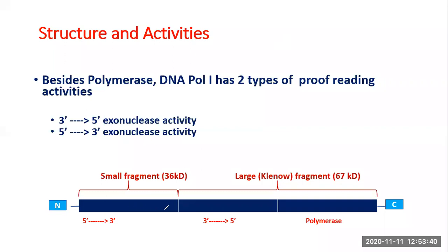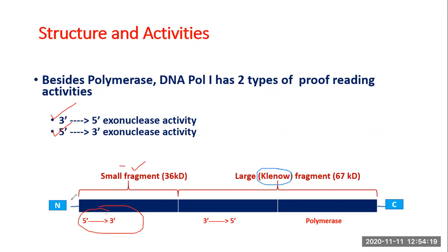Structurally, DNA Pol I is a 103 kilodalton enzyme. When cleaved by a protease, it yields two fragments: a small fragment of about 36 kilodaltons and a large fragment of about 67 kilodaltons, also called the Klenow fragment, which is available commercially. DNA Pol I has three types of activities: polymerase activity, 3'→5' exonuclease activity, and 5'→3' exonuclease activity. The 5'→3' exonuclease activity is located on the small fragment at the N-terminus, while the 3'→5' exonuclease and polymerase activities are located on the larger Klenow fragment at the C-terminus.